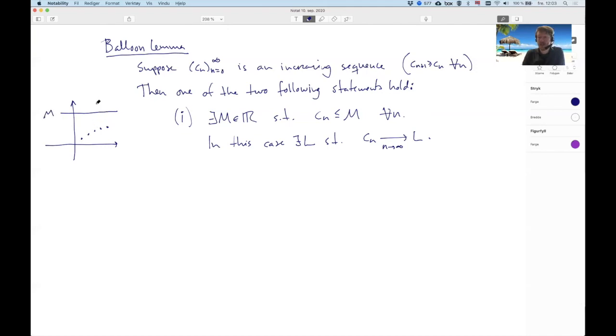that it definitely doesn't pass, then we get from this result that there is some l, perhaps a bit lower than m or perhaps equal to m, we don't know, such that the sequence tends towards l as n goes to infinity.